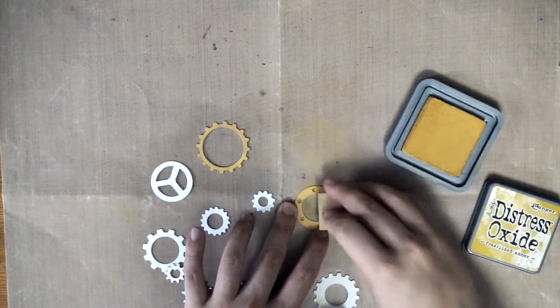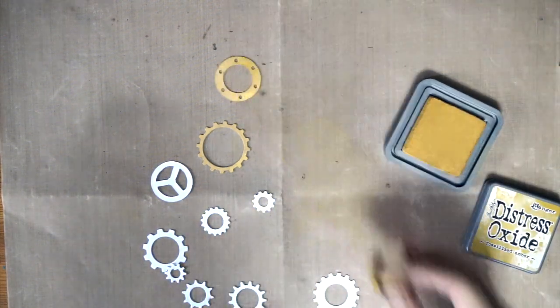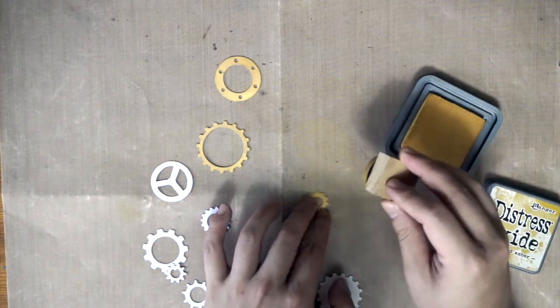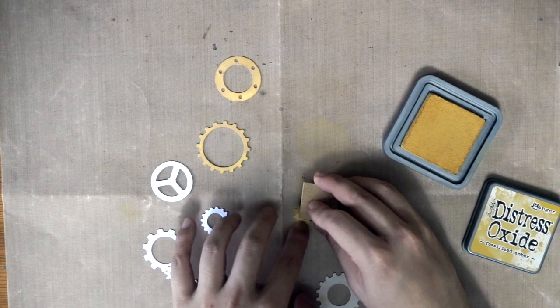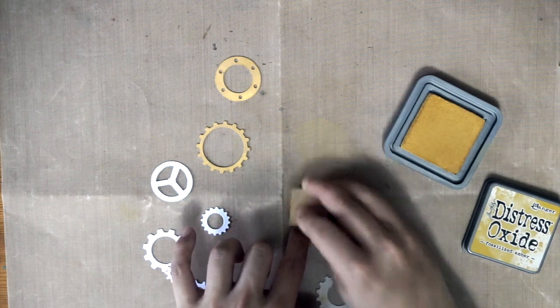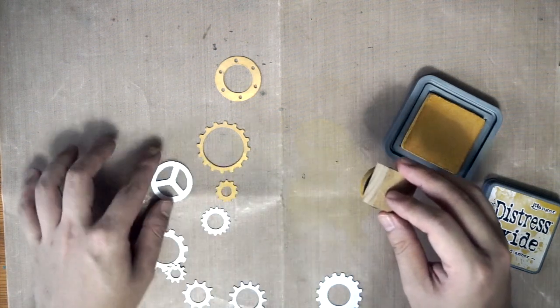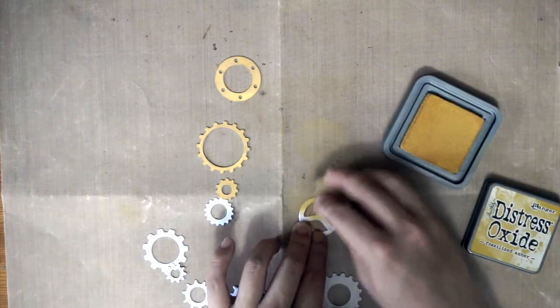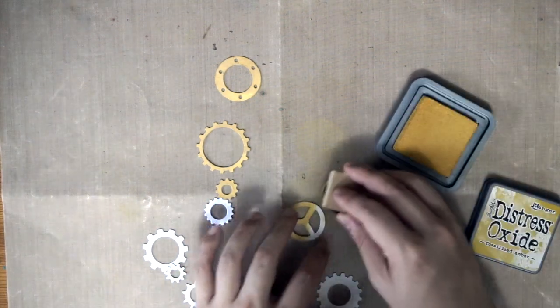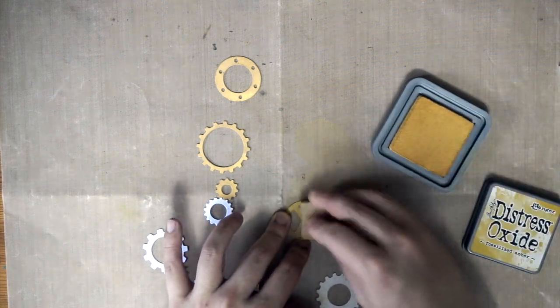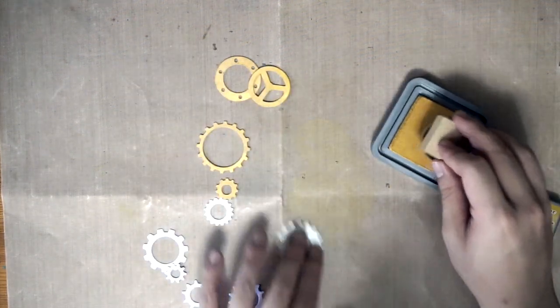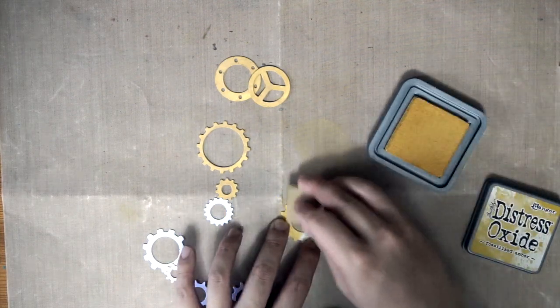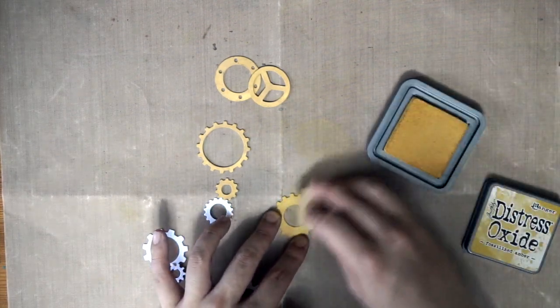Now for the Distressed Oxides, I applied them also onto this gear cut-out. This is from the new Tim Holtz Alterations Die, the industrial set. What you get is this really nice medium size dies, which are very hard to do as a metal steel die. The technology has made this possible.